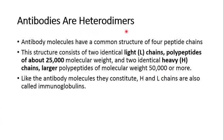Regarding the structure, antibodies are heterodimers. Heterodimer means it is not a homodimer — it does not consist of similar subunits or similar polypeptides. Heterodimer means it is made up of dissimilar polypeptides, that is why it is called a heterodimer.